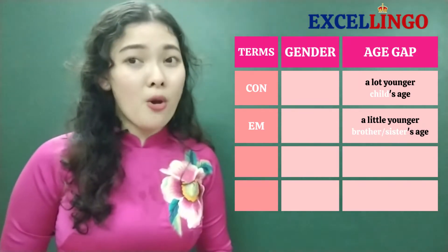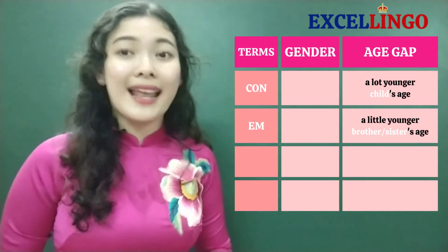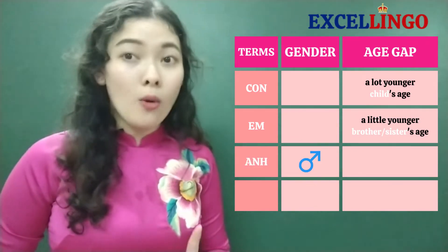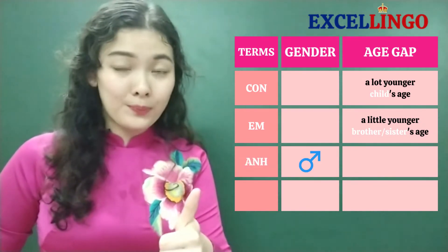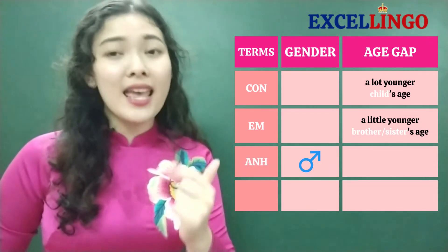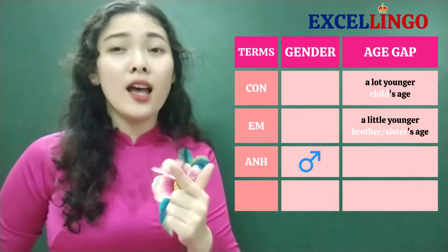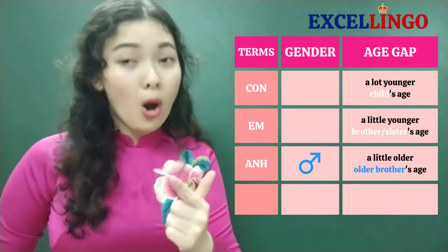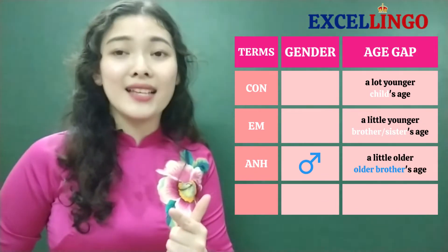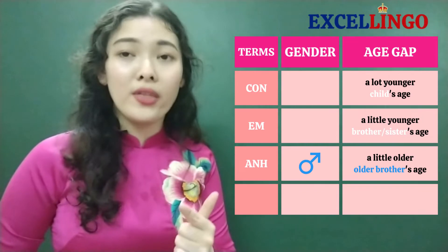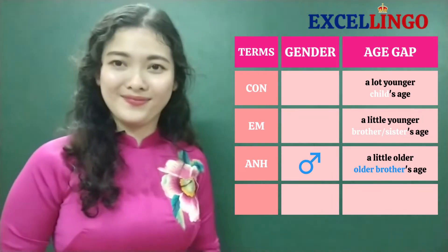We call someone 'anh' when it's a male and he's a little older than us — he's about the same age as our older brother.